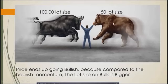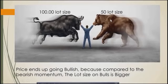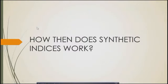The side with the highest volume wins — so which direction do you think the market is going to go? Of course the market is going to go bullish, because the bulls have the highest volume — trading with 100 lot size versus 50 lot size. Obviously the bulls have the highest volume, so the market goes bullish because compared to the bearish momentum, the lot size on the bulls is bigger.